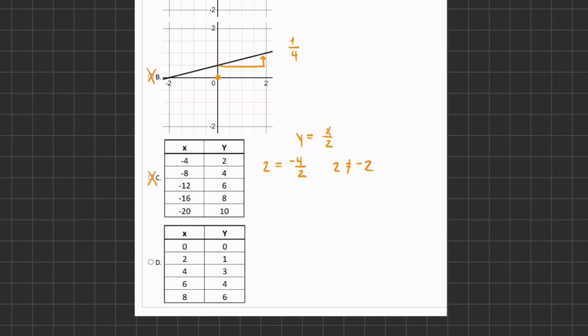Now let's move on to option D. Here we'll do the same. We'll plug in our values that are given in the table to see if the equation is true. We will plug in 0 for Y and 0 for X, and here we get that 0 equals 0, and that is true.